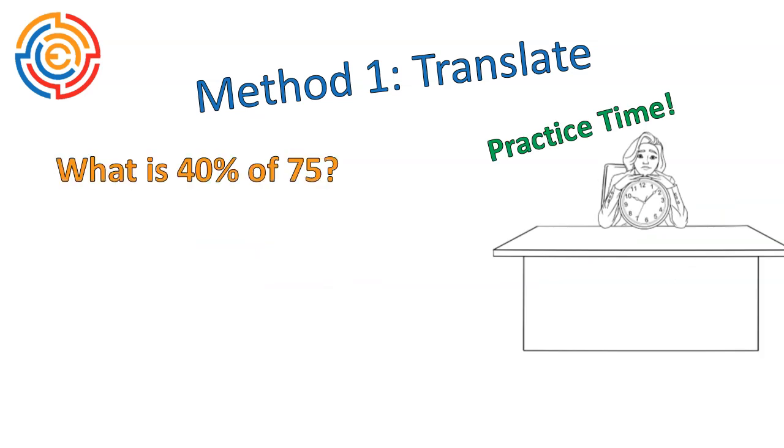I'm going to give you this question: What is 40% of 75? I want you to convert that, convert the percent into a decimal, of into multiplying, 75 as 75, plug it into a calculator, see what happens. Three, two, one, go.